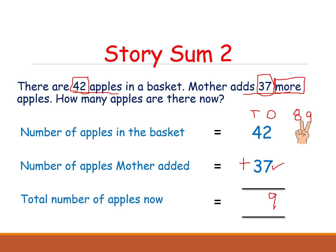In the tens place we have 4 plus 3. 4 is the biggest number. Keep 4 in your mind and open 3 fingers. After 4: 5, 6, 7. So how many apples are in the basket now? 79.